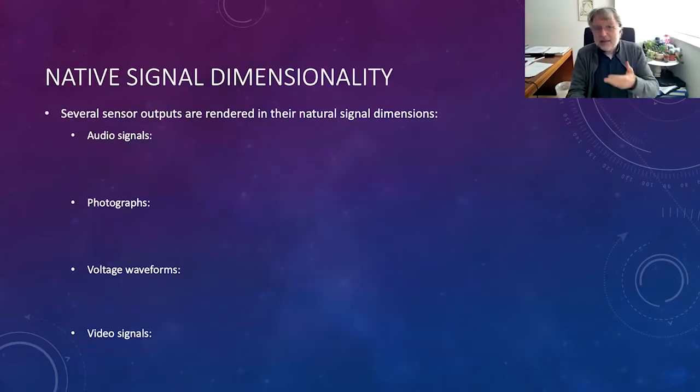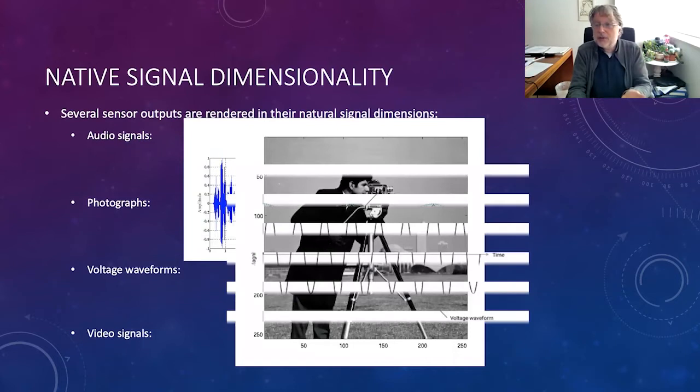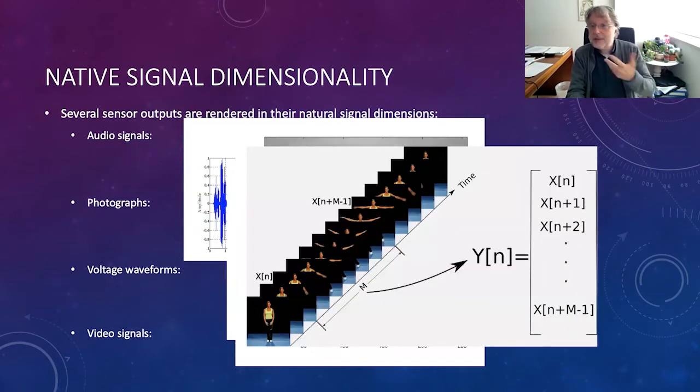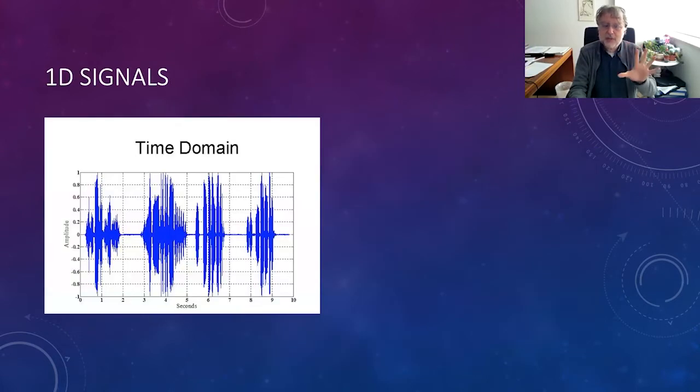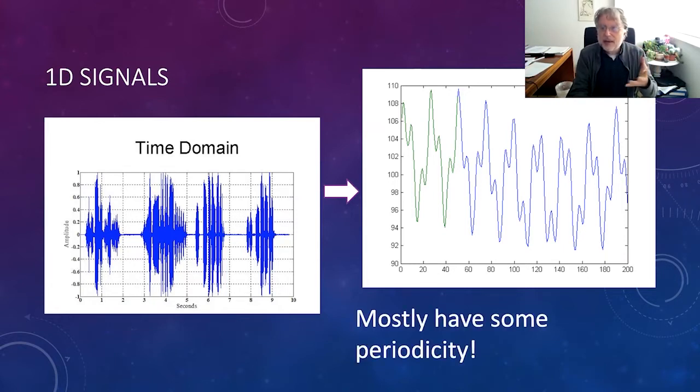But again, since most of the native signal dimensions are readily available as the sensor dimensions, for example, in audio signals, this is one-dimensional output. In photographs, this is two-dimensional. Voltage waveforms are two-dimensional, or video signals are three-dimensional. But sometimes when we focus to one-dimensional cases, when we zoom into that, we see that they may contain some portions where there is a periodicity. For example, this is the wall part of a one-dimensional signal. And as you see, it's repeating itself. That is inspiring us about an idea where we can make use of that periodicity.